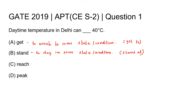Option C is 'reach'. The word 'reach' means to reach some place, state, or condition. If we use 'reach' in the blank, the sentence becomes 'Daytime temperature in Delhi can reach 40 degrees Celsius.' This seems like a correct sentence, so option C can be correct.